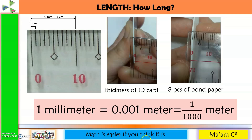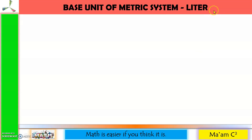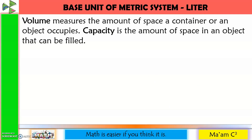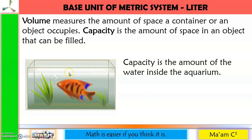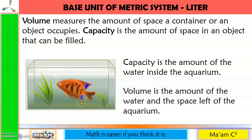Another base unit of the metric system is the liter. Volume measures the amount of space a container or an object occupies, while capacity is the amount of space in an object that can be filled. Consider an aquarium: the capacity is the amount of water it can hold — we leave clearance at the top so water doesn't overflow. The volume includes both the water and the remaining space, so volume is the total space of the aquarium.